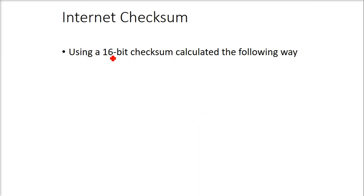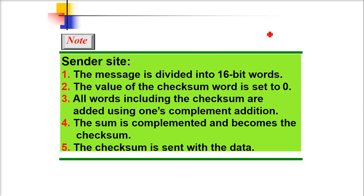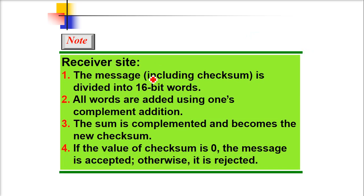Then we have internet checksum. We use a 16-bit checksum calculated in a certain way. The message is divided into 16-bit words. The value of the checksum word is set to 0. All words, including the checksum, are added using one's complement addition. The sum is complemented and becomes the checksum, which is sent along with the data.